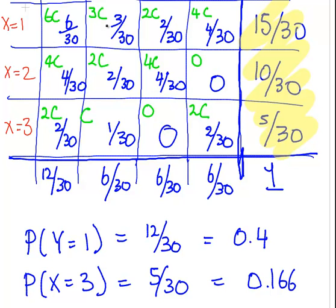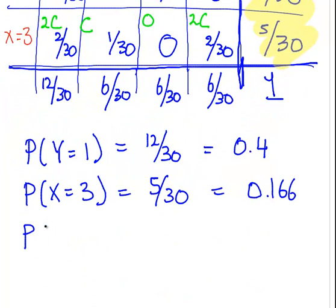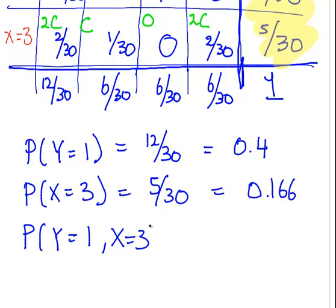The marginal distributions treat each variable on its own rather than jointly. To clarify what the joint distribution means: for example, the probability of y equal to 1 and x equal to 3 is equal to 2/30 — that's the joint distribution.